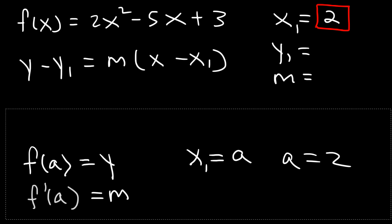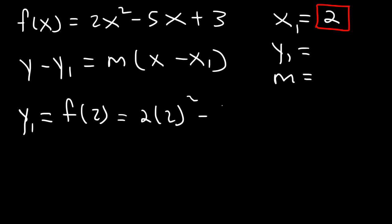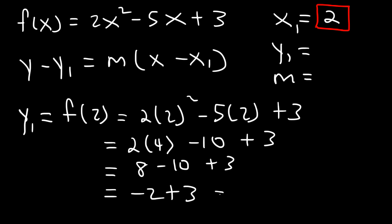So let's determine y first. y is equal to f of 2 — this is y1 specifically — and that's going to be 2 times 2 squared minus 5 times 2 plus 3. 2 squared is 4, 5 times 2 is 10, and 2 times 4 is 8. 8 minus 10 is negative 2, and negative 2 plus 3 is 1. So y1 is 1.